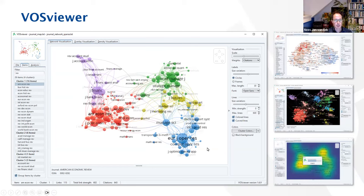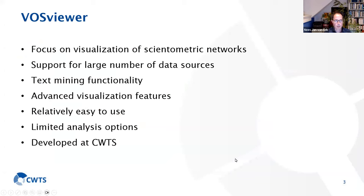That is the type of information we can extract from these network visualizations. In VOSViewer, we have different types of visualization options available. We primarily focus on the visualization of scientometric networks, but the tool can also be used to visualize general networks — for example, social networks. We have support for a large number of data sources containing the metadata of scientific outputs. We have implemented text mining functionality, and we have deliberately limited the number of analysis options, making the user interface relatively clean and easy to use. The tool is developed at CWTS.